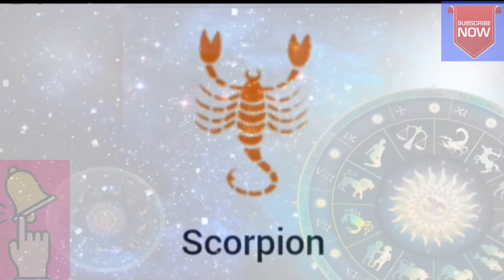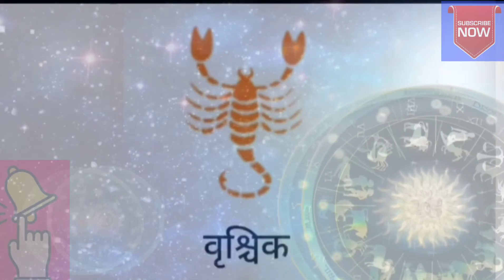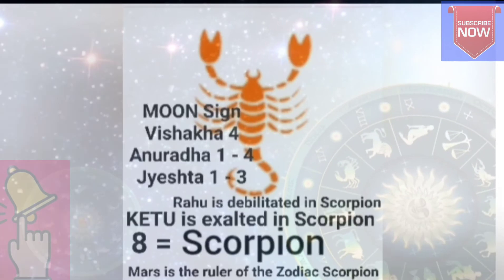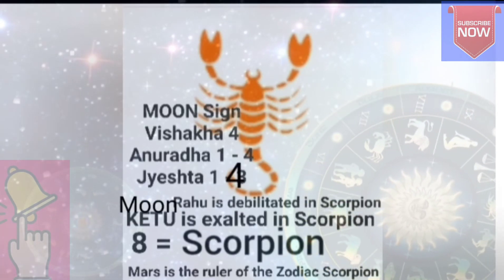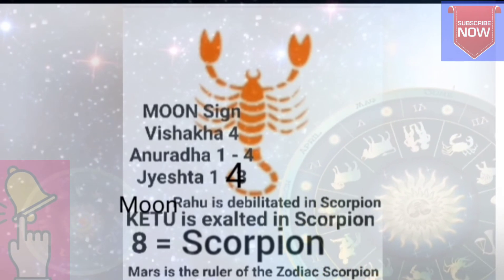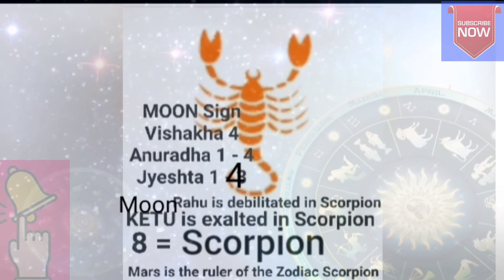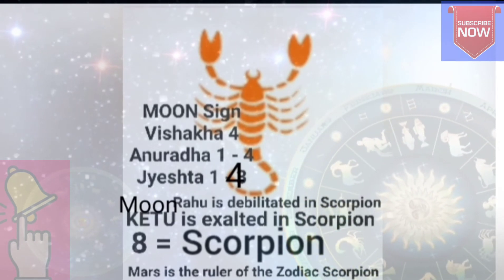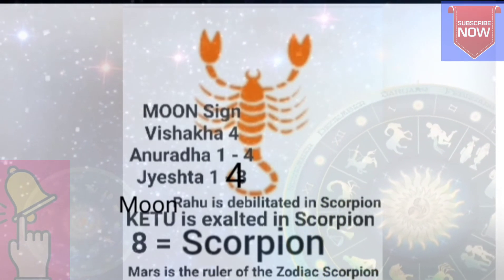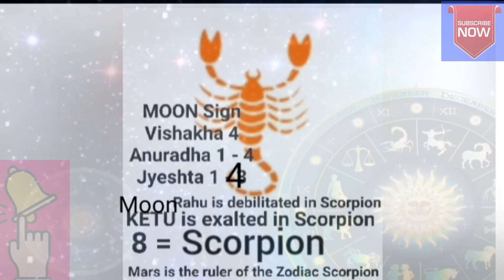Scorpio, number 8, is called Vrishchik in Hindi. This Rashi is ruled by Mars. Moon and Rahu are debilitated in Scorpio and Ketu is exalted in Scorpio. The nakshatras are: Vishakha 4 Pada, Anuradha 1, 2, 3, and 4 Pada, and Jyeshtha 1, 2, 3, and 4 Padas.